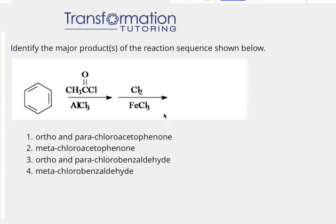Identify the major products of the reaction sequence shown below. We have a benzene ring and the reagent CH3COCl with AlCl3, and this is called Friedel-Crafts acylation.